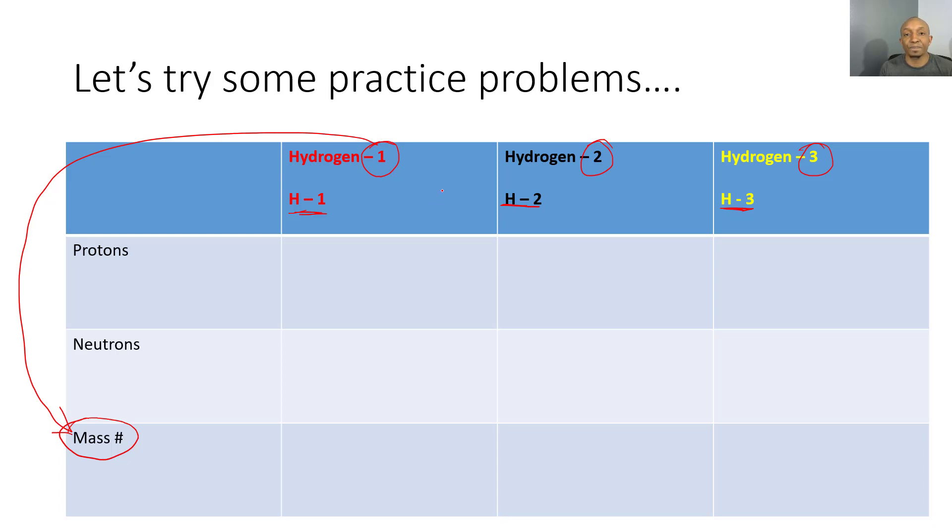Welcome back. We should all have finished our chart for hydrogen, so let's see if we got it right. Each hydrogen already has that mass number: hydrogen-1, hydrogen-2, and hydrogen-3. If you look at the top left corner and locate the hydrogen symbol, you'll notice on your periodic table the number of protons will be 1, 1, and 1.